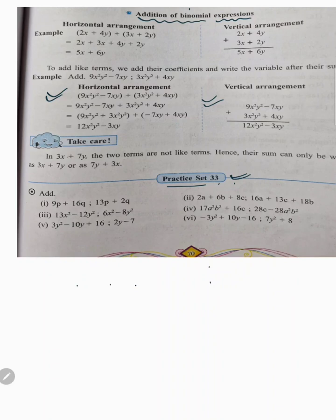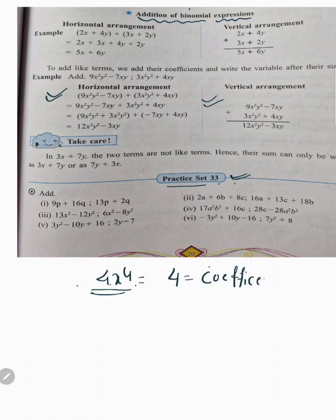First we discuss the difference between coefficient and variable. For example, in 4x, here 4 is the coefficient. Previously we discussed in practice set 31 the algebraic expressions — mononomial, binomial, trinomial, and polynomial. Here x means it is a variable.